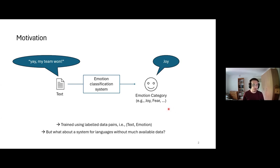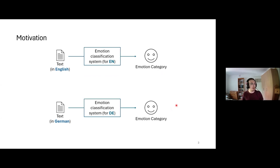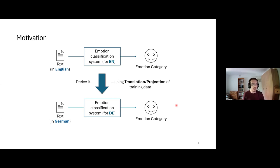However, this only works if we have labeled data available. For languages with few native speakers or no economic incentive to create datasets, this is difficult. A traditional approach is to start with an existing emotion classification system for a high-resource language like English, then use that data for a low-resource language like German — for instance by translating the English training data using machine translation while keeping the emotion labels the same.